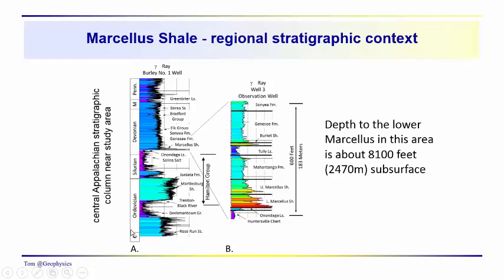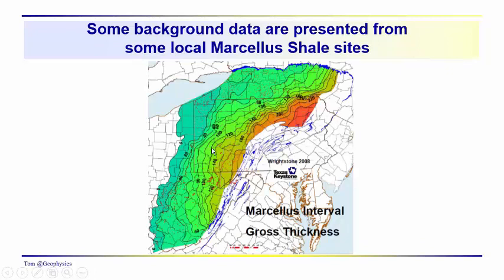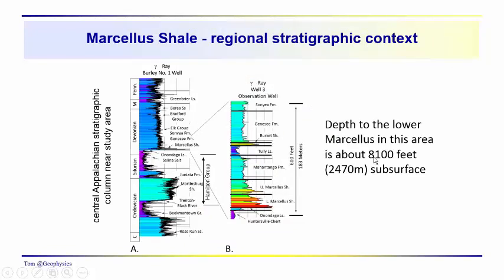This would be a typical stratigraphic column for the region. You can see we have pretty much the entire section — the log doesn't show the Cambrian, but there is a thick sequence of Cambrian sediments that go down to a metamorphic and igneous basement complex in the region. The section is fairly thick, and we've got the Marcellus here at the base of the Middle Devonian. It lies at a depth — depending on where you are — on the order of 8,000 feet or so.